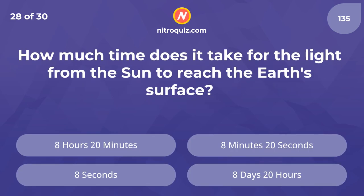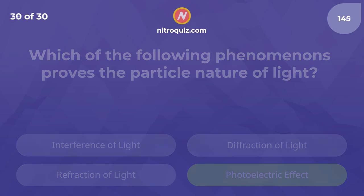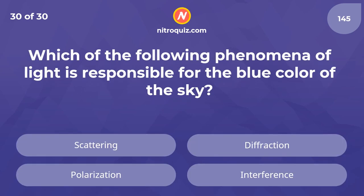How much time does it take for the light from the sun to reach the Earth's surface? The answer is 8 minutes and 20 seconds. Which of the following phenomena proves that the particle nature of light is real? The answer is the photoelectric effect. Which of the following phenomena of light is responsible for the blue color of the sky? The answer is scattering.